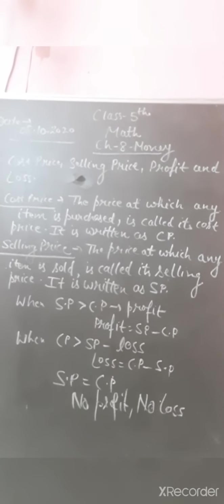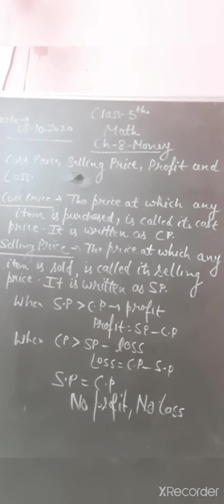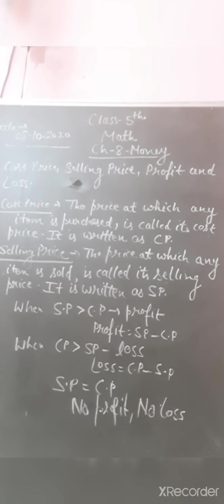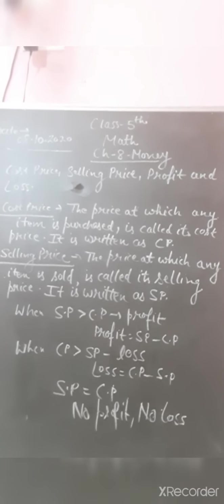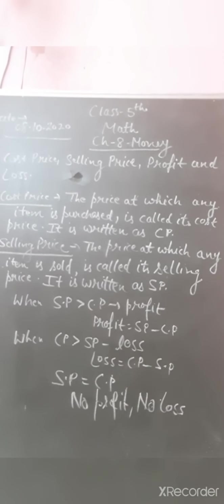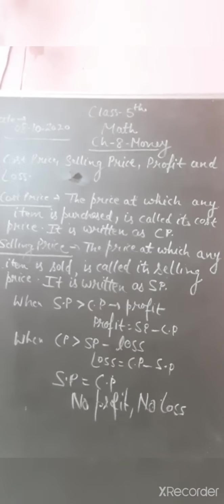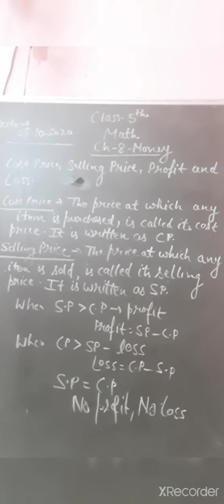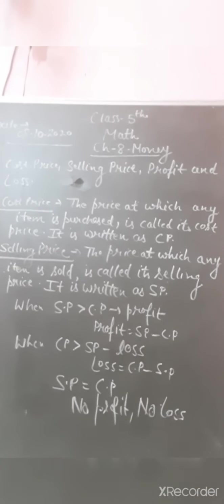When SP is greater than CP, there is profit. Suppose I purchased an item for 10 rupees and am selling it for 15 rupees — I am getting 5 rupees more, so that is profit. If selling price is more than cost price, there is profit, and profit is calculated as: Profit = SP minus CP.